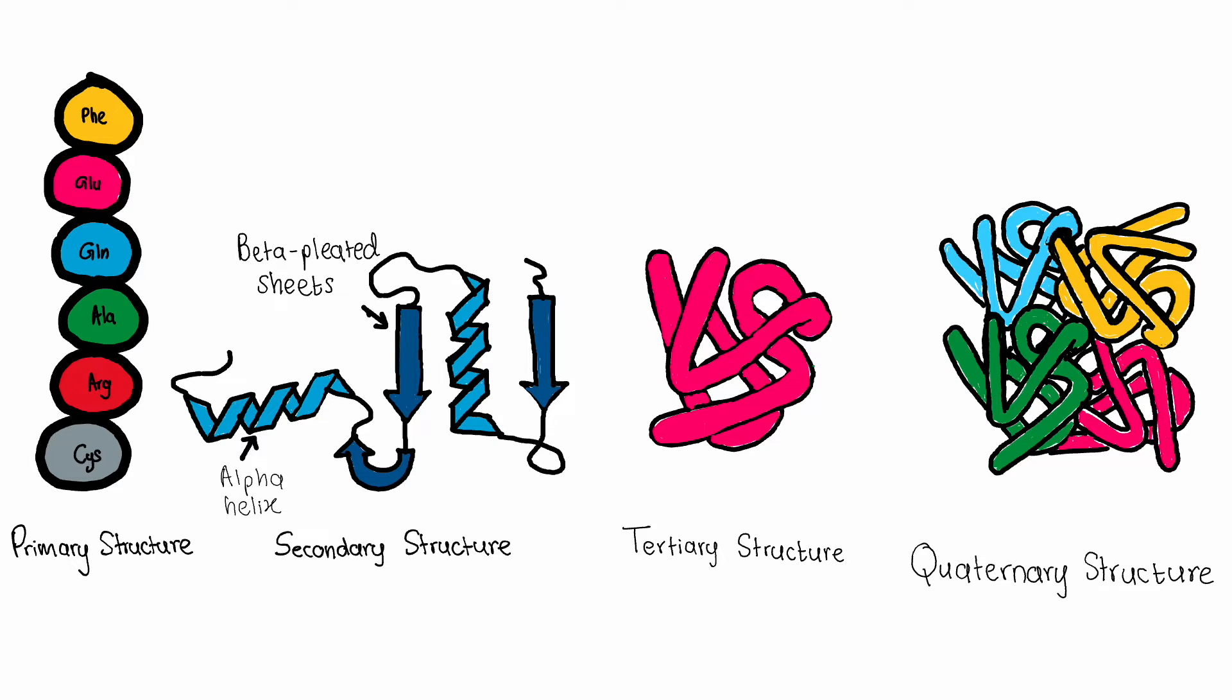Proteins are complex macromolecules made up of amino acids. Their structure can be described at different levels. The different levels include the primary, secondary, tertiary, and quaternary structures. Let's consider the secondary structure.